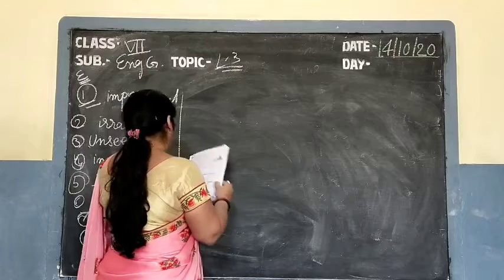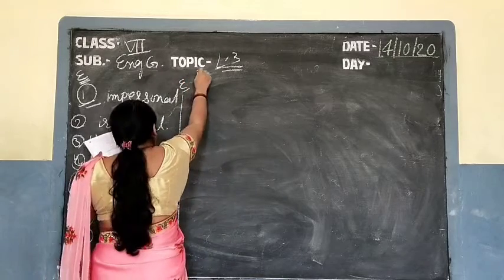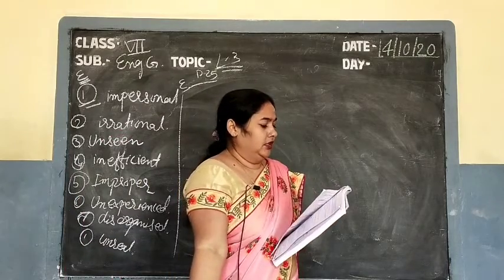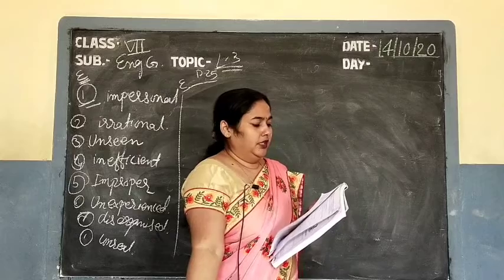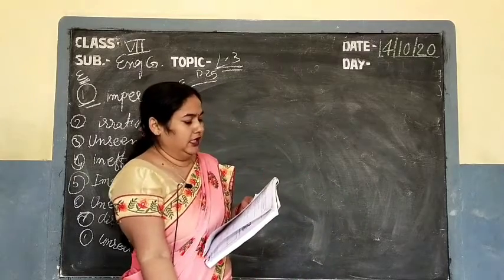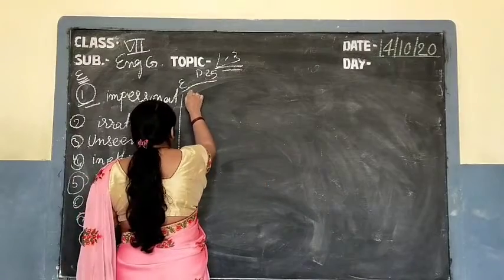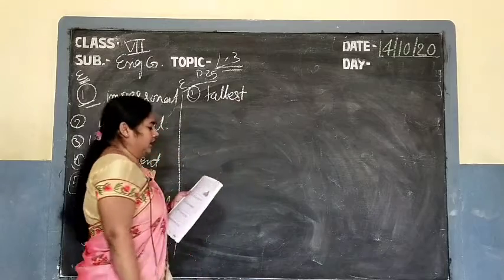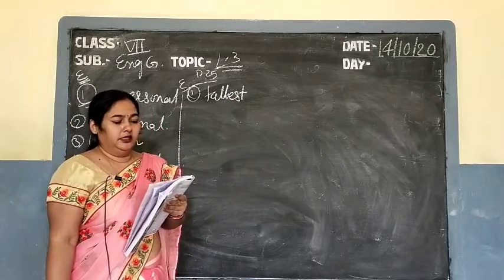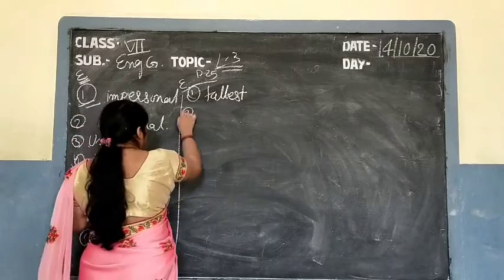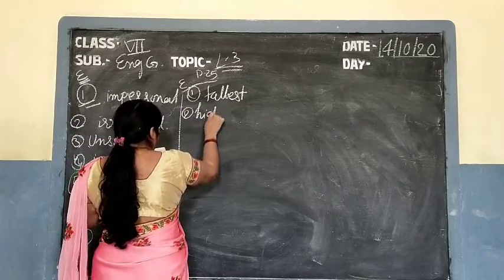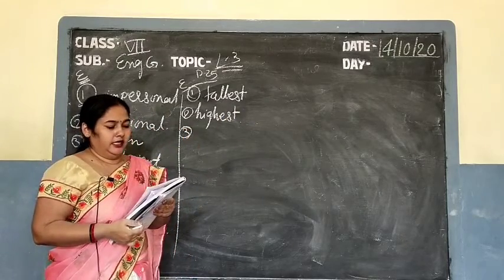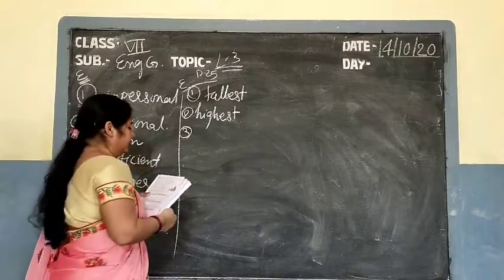Now the next exercise e, again on page number 25: fill in the blanks with the correct degree of comparison of adjectives. Number 1: Ramu is the dash boy in the class — Ramu is the tallest boy in the class. Number 2: Mount Everest is the dash mountain in the world — 'high' becomes 'highest'. Number 3: The new bulb is dash than the old one — 'bright' becomes 'brighter'.